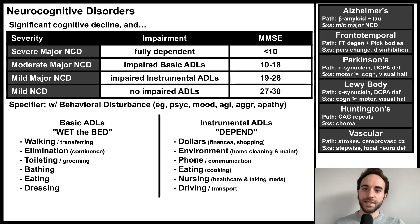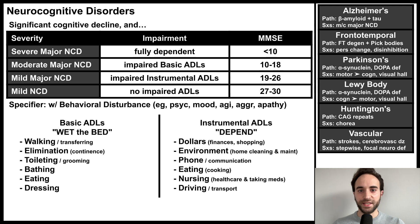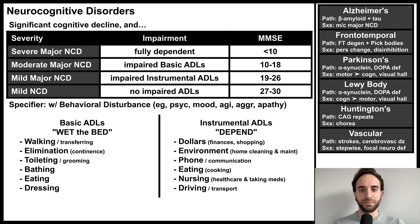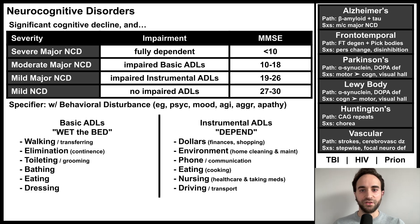This list is not comprehensive and there are many other rarer causes of major NCD, including diseases, nutritional deficiencies, and other medical problems. A few that are specifically listed in the DSM include traumatic brain injuries, HIV, and prion diseases.